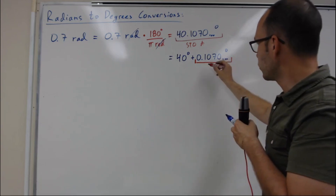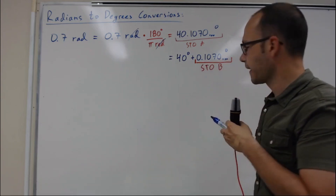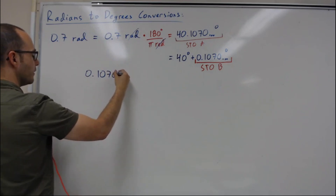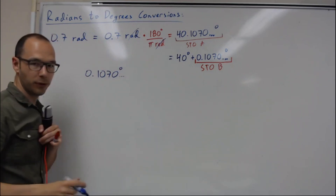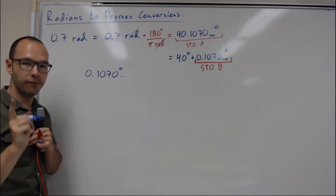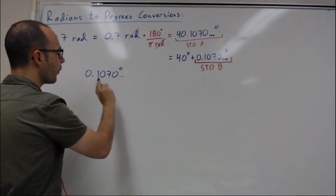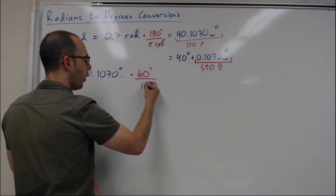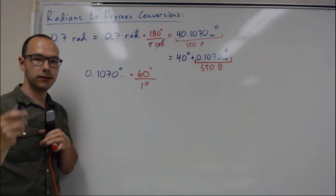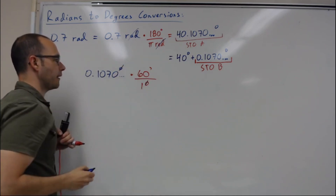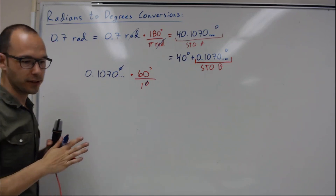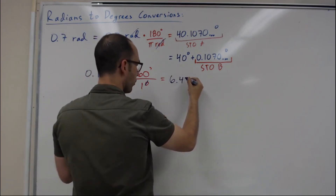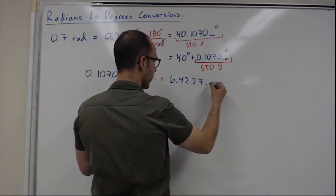Store that into memory B. We're going to be working with that 0.1070... degrees to figure out the number of minutes first. So we multiply by 60 minutes per one degree, which cancels out the degree unit, leaving us with minutes. This gives us 6.4227... minutes.